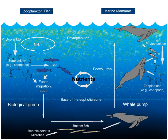In ecology and earth science, a biogeochemical cycle, or substance turnover, or cycling of substances, is a pathway by which a chemical substance moves through biotic biosphere and abiotic lithosphere, atmosphere, and hydrosphere compartments of Earth. There are biogeochemical cycles for the chemical elements calcium,